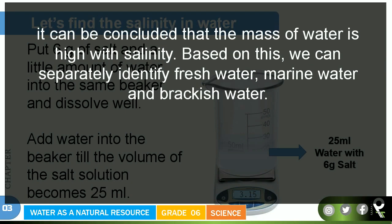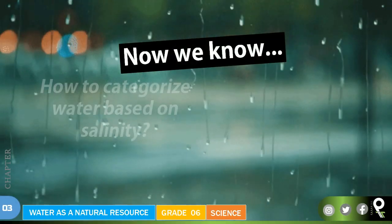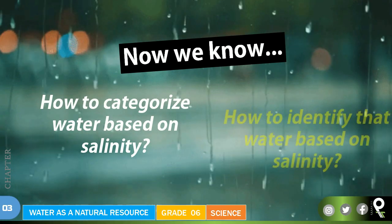It can be concluded that the mass of water is high with salinity. Based on this, we can separately identify fresh water, marine water, and brackish water. When measuring the mass of water, marine water will be highest, then brackish water, and then fresh water. You can do the same test at home using a kitchen scale with plain water, water with 2 grams of salt, and water with 6 grams of salt dissolved.